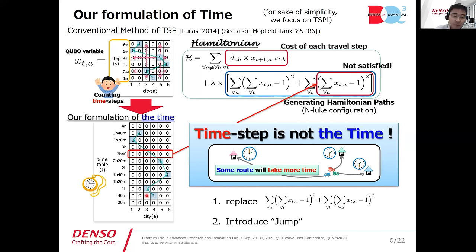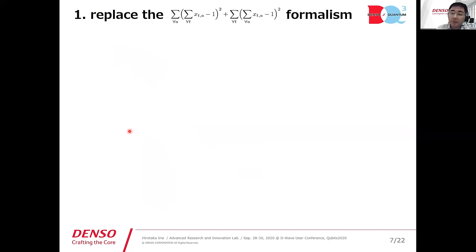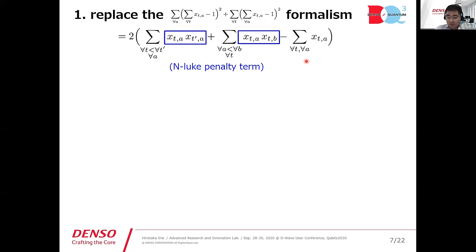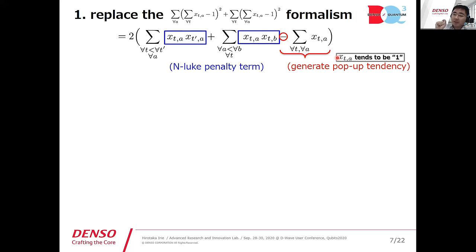We will not use the pop-up term directly; instead, we introduce a negative shift of the cost which plays a similar role. This is our negative-shift formulation for TSP, with a balance condition between the negative and positive terms. We then introduce a jump: in conventional TSP, cost is associated with one-step-forward movement, but in our case we describe travel time by introducing a penalty for early arrival and placing the cost on the on-time arrival configuration.